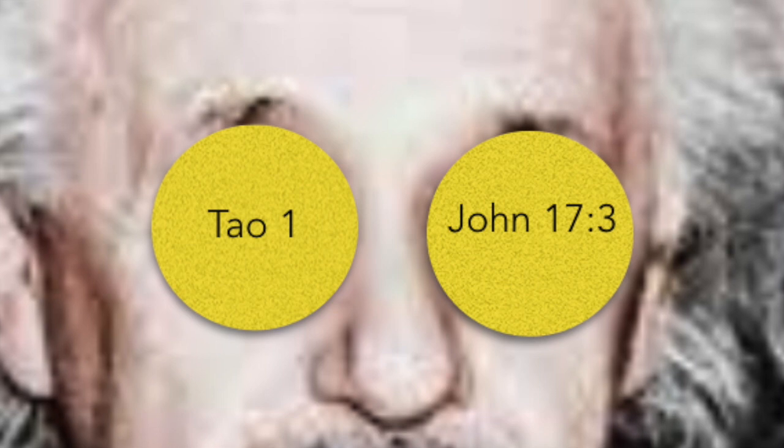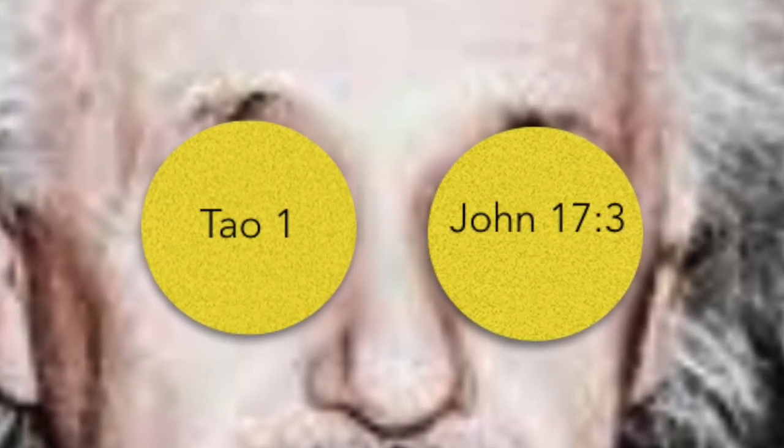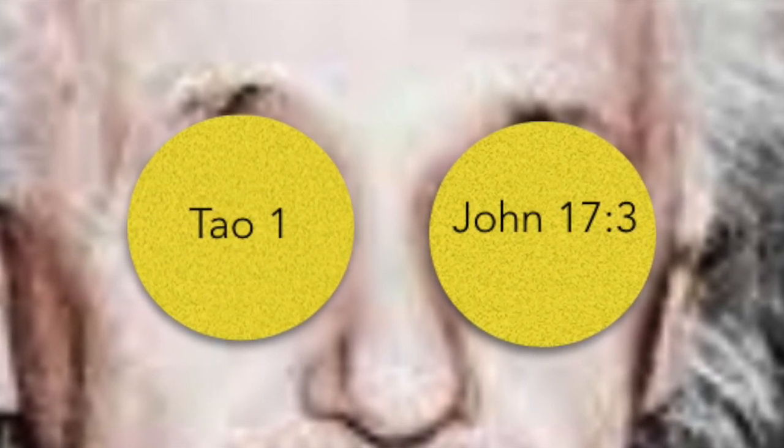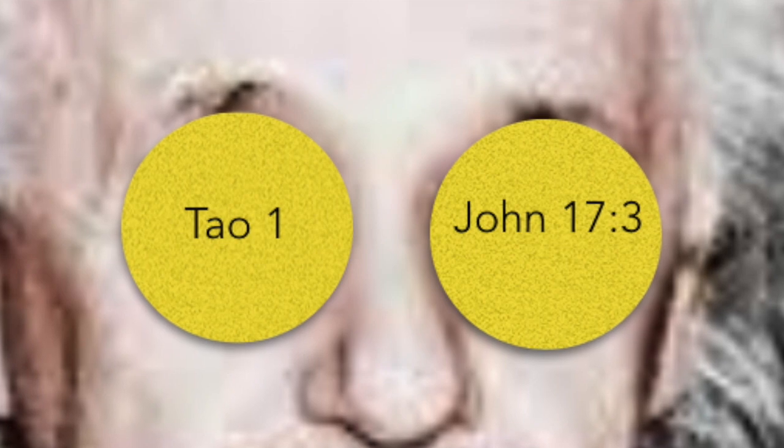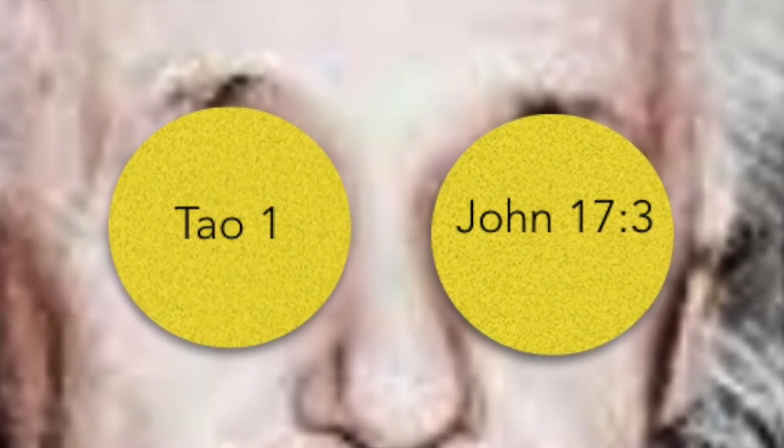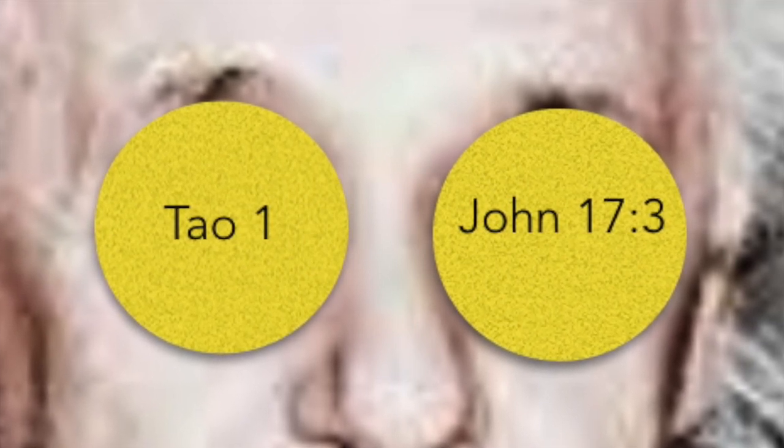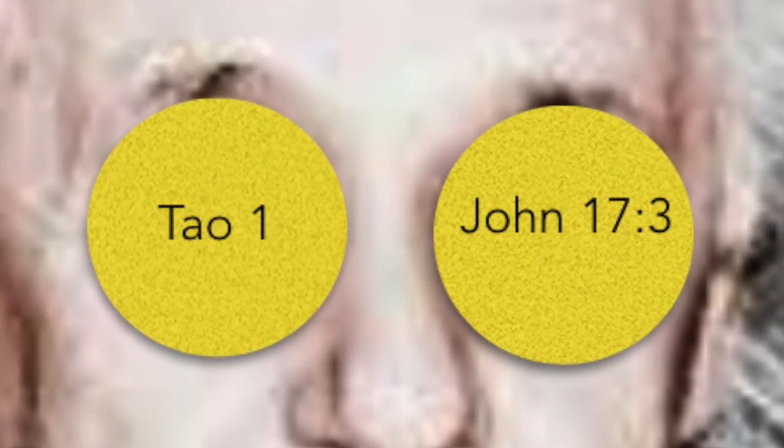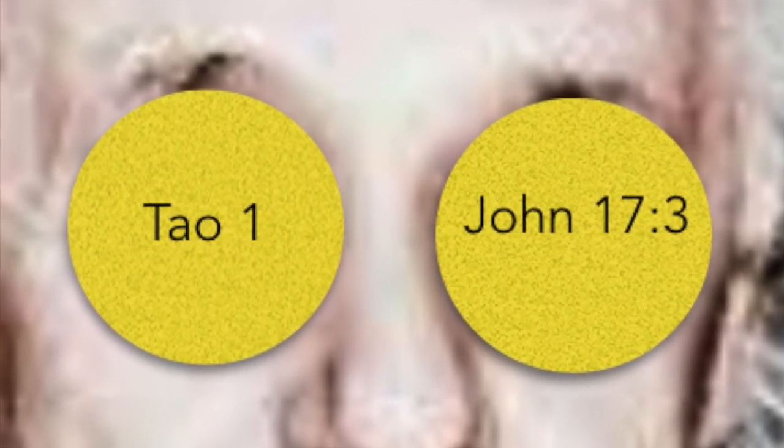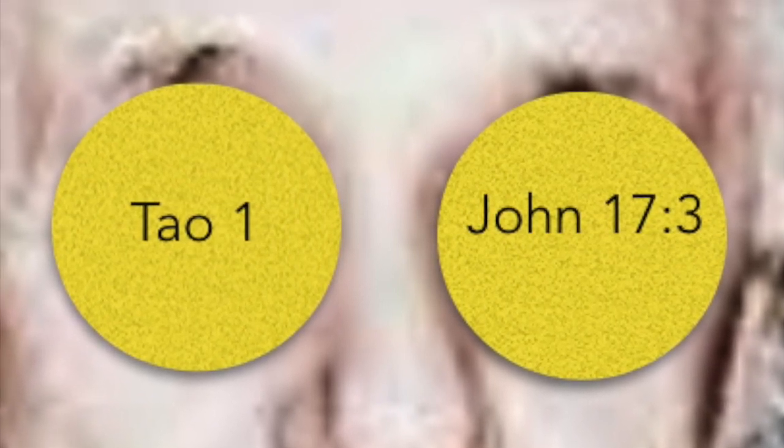Let the fool wish for a false reputation, for precedence among the bikshus, for lordship in the convents, for worship among other people. May both the layman and he who has left the world think that this is done by me. May they be subject to me in everything which is to be done or is not to be done. Thus is the mind of the fool, and his desire and pride increase.